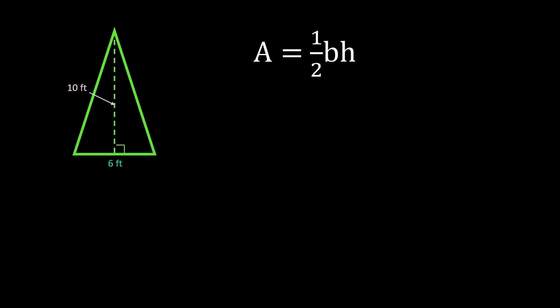To calculate the area of the triangle, we're using the formula area equals one-half times the base times the height. The base of this triangle is 6 feet and the height of this triangle is 10 feet. So we're going to start by plugging those values in — substituting 6 for b and 10 for h.